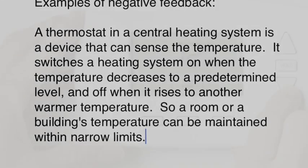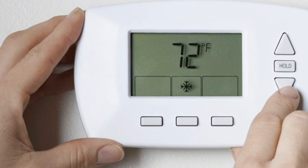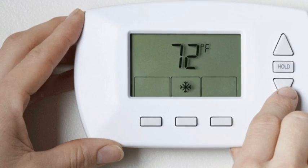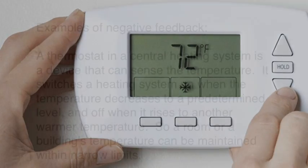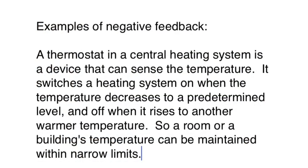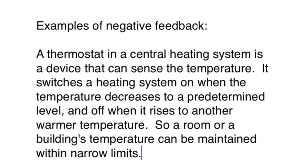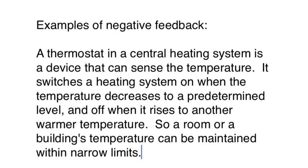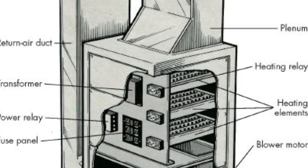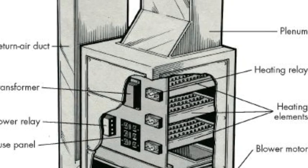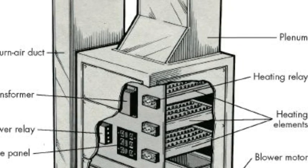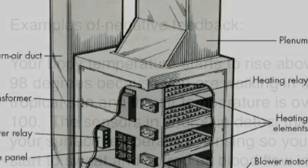Here's an example. In your house you get cold, you set the thermostat for a certain degree. When the house falls below that, the furnace kicks on and warms the house back up to the original equilibrium. That's a negative feedback loop.